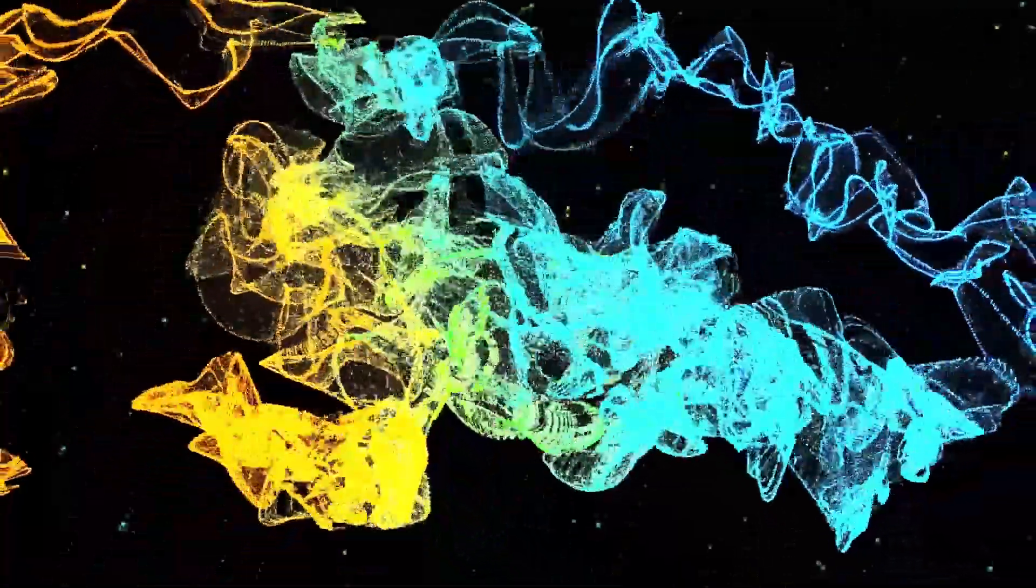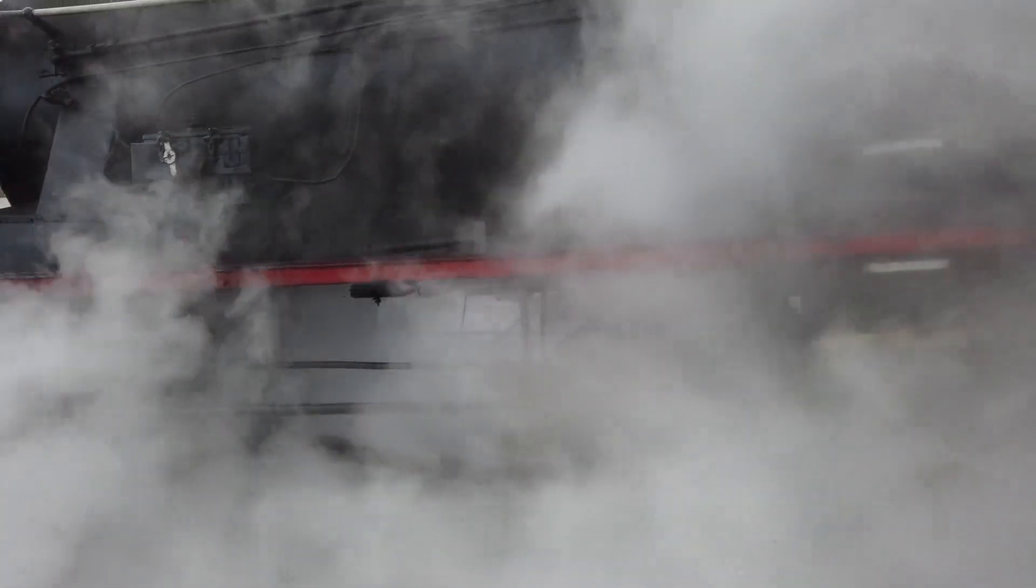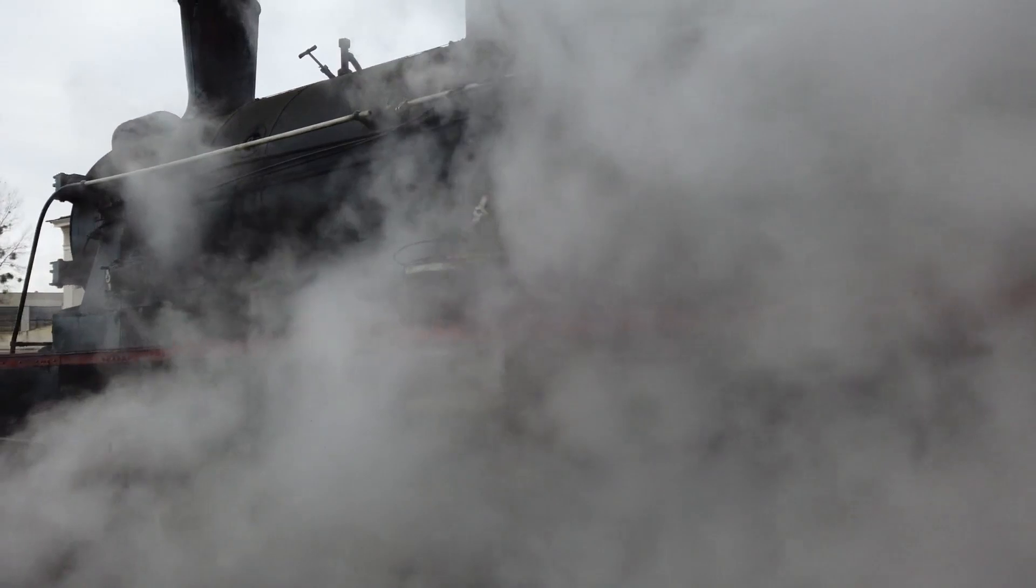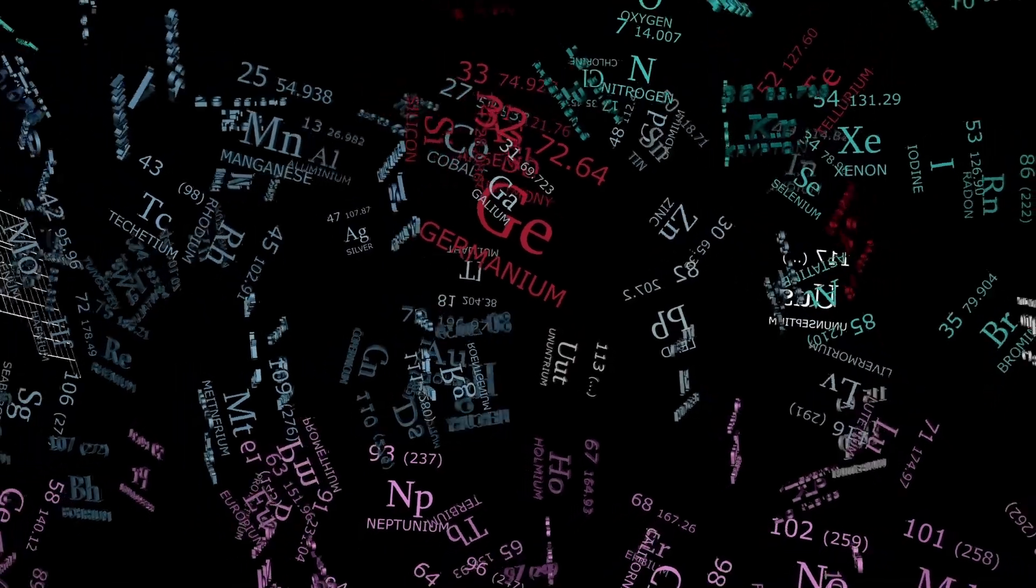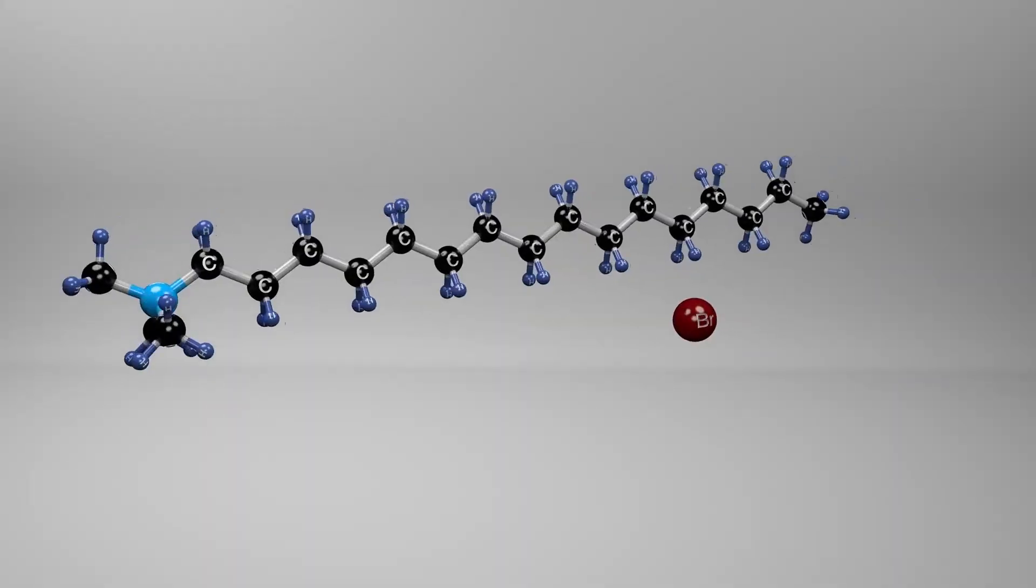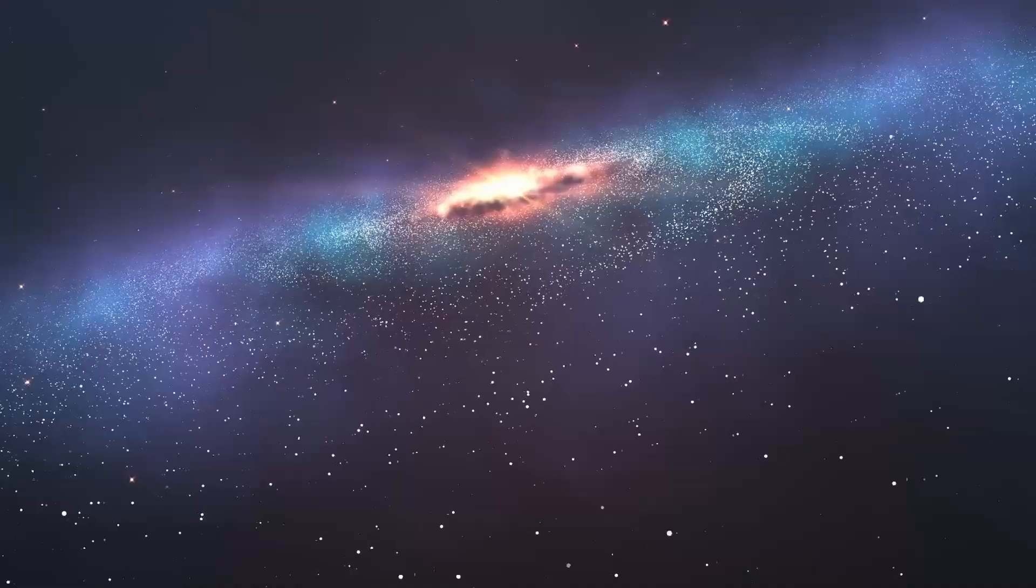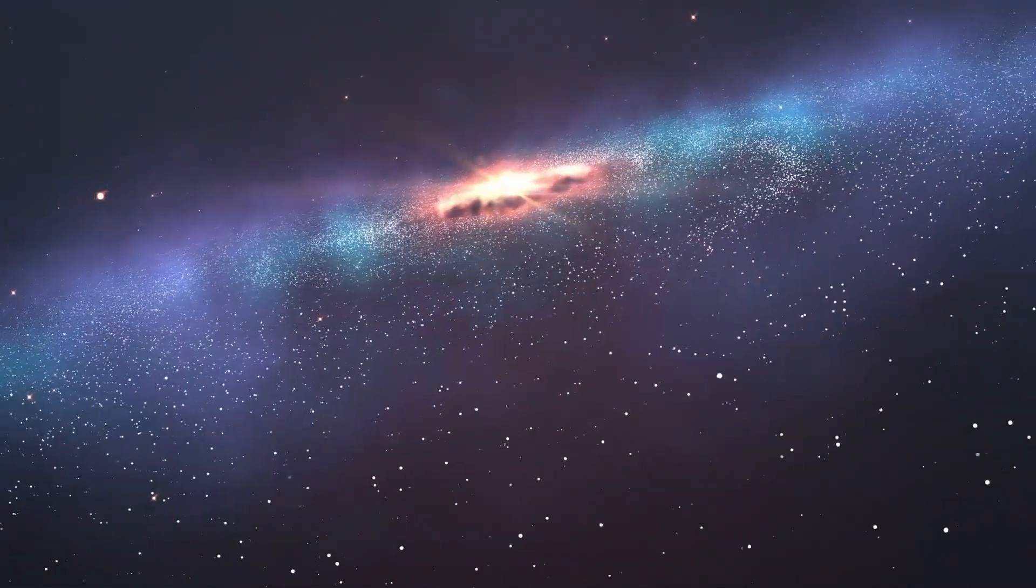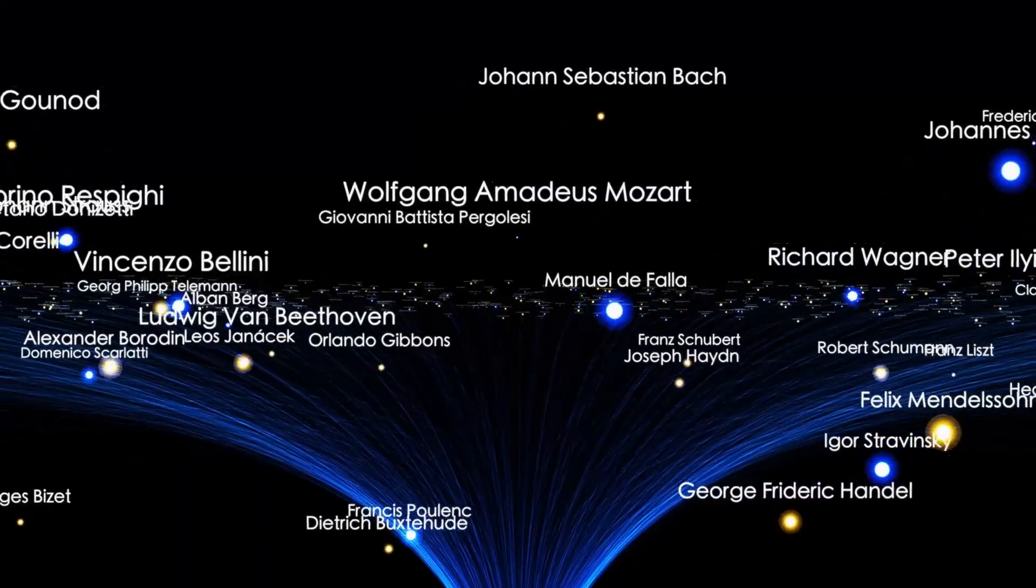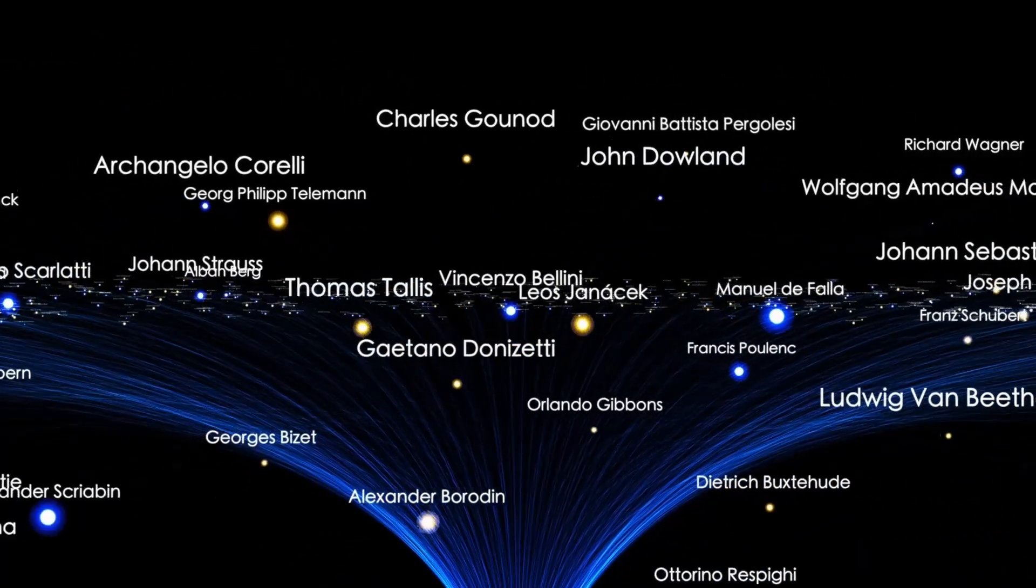And here's where the science begins to tremble. Because when everything is ruled out, when sublimation, randomness and chaotic structure all fail, what remains is a possibility no one wants to face. That 3i Atlas is engineered, built, manufactured. Perhaps not by intention. Perhaps it's debris, a fragment, a derelict vessel from a civilization that died before Earth grew forests. But maybe it's something worse. Something alive. A probe still active. A mechanism still responding. A system that sees us and doesn't care. One that follows a trajectory not set by nature, but by design.